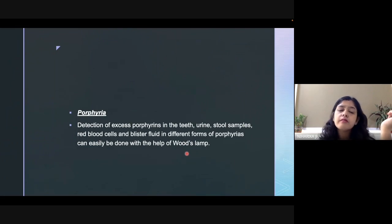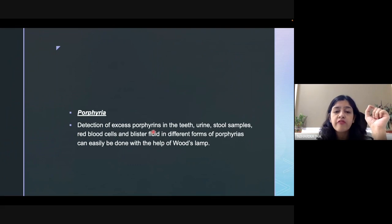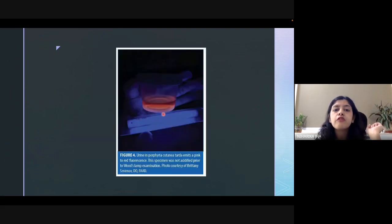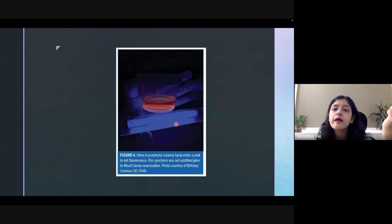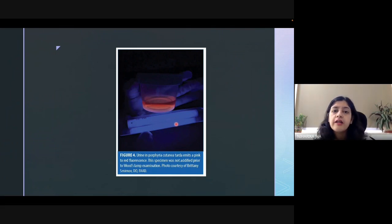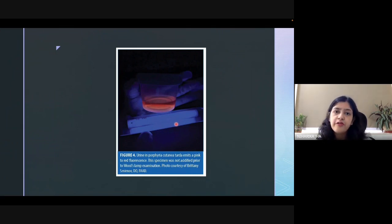Porphyria is another application — Wood's lamp can be used in the detection of excessive porphyrins in teeth, urine, or stool samples. A patient with porphyria cutanea tarda shows a pink to red color fluorescence. These are the various diseases in which Wood's lamp can be used in dermatology. I hope you liked today's class. If you want to learn more in dermatology, please connect to us at the email IDs given in the video. Thank you.